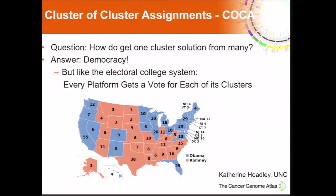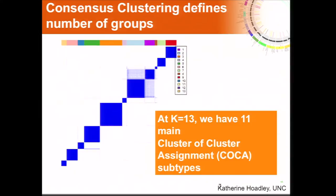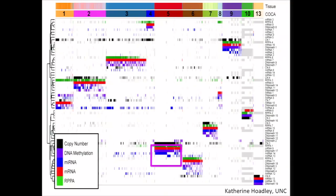How do you cluster this data? Katie Hoadley set out to take these six different subtypes and come up with one subtype to rule them all. The answer was: let them all vote using a system like electoral votes, where the number of electoral votes a platform gets equals the number of clusters it came up with. She created a new binary matrix with all the copy number subtypes, methylation subtypes, and so on — these are the samples — and clustered this matrix. She calls this the Cluster of Cluster Assignments, or COCA. We found 13 integrated subtypes; a couple were tiny, so we analyzed the larger 11 of them.